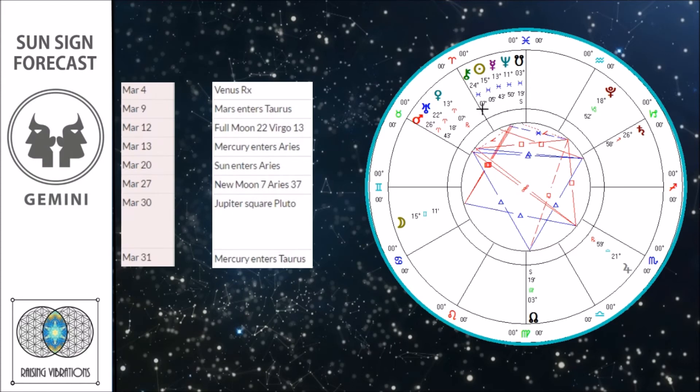Venus is going to be saying: I still have stuff to complete, still stuff to let go and decondition from. And Mars is saying: we still want to be moving forward. The mantra for this month is: what are you letting go that is allowing you to move forward?